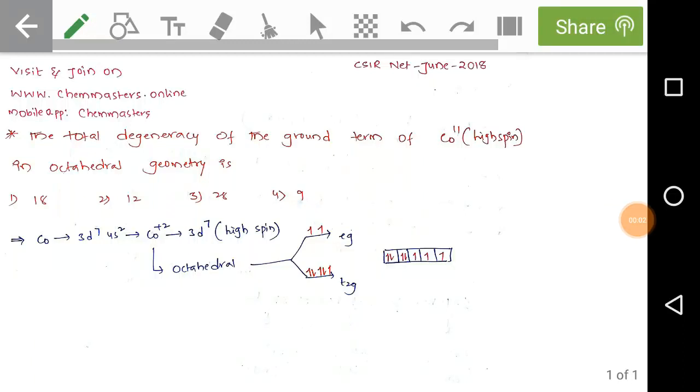Hi, now we are discussing the problem of CSARnet June 2018 chemical sciences. Just look at the given problem: the total degeneracy of the ground term of cobalt(II) high spin in octahedral geometry.